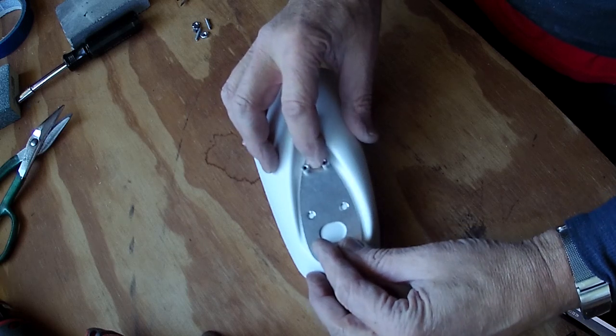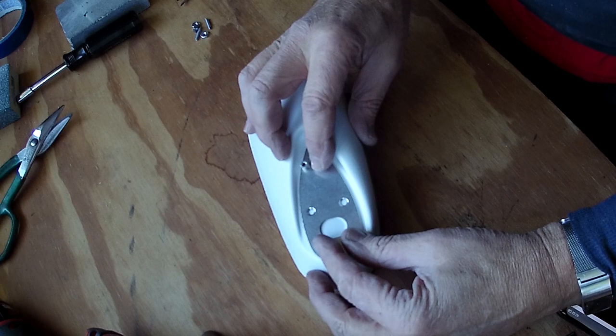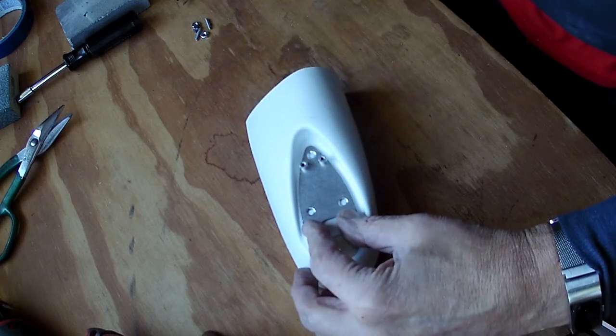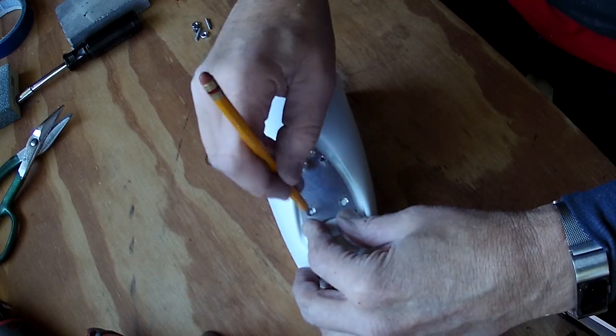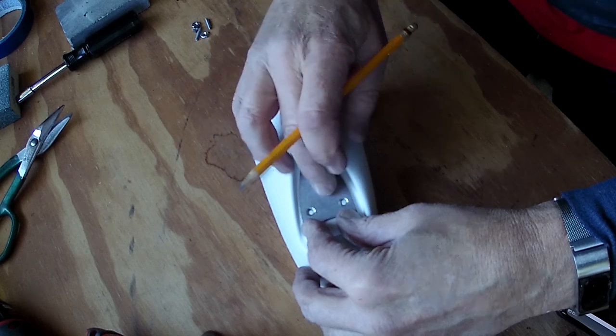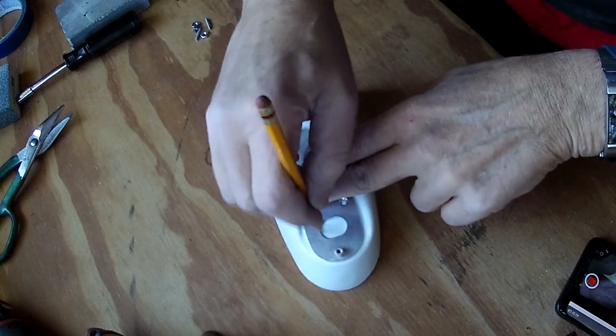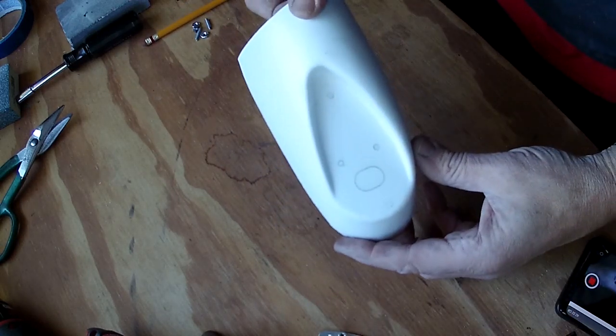This is sort of a chicken and egg problem because if you try to fit the thing to the wing first and then line up the holes, you're going to struggle to find the holes. So I'm just going to go ahead and make the holes first. And then I'll have this big hole to be able to reach through and feel how close I am. I've got them marked, let's go drill them.